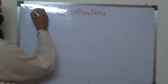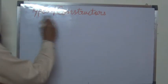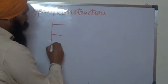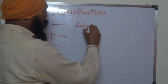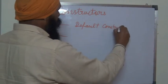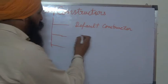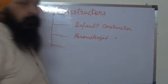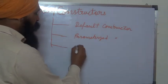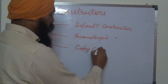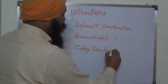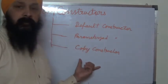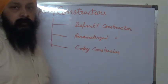Next we will discuss the types of Constructors. There are three types: the first is the Default Constructor, the second is the Parameterized Constructor, and the third is the Copy Constructor. We will discuss these one by one.